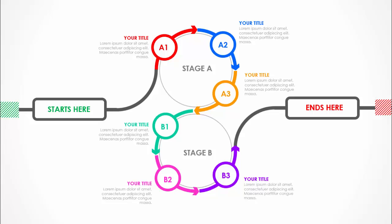In today's tutorial I'm going to show you how to create a two-stage circular infographic slide in PowerPoint. There are two stages: Stage A and Stage B. The process starts at Stage A, going through A1, A2, A3, then passing on to Stage B with B1, B2, B3, where the process ends.